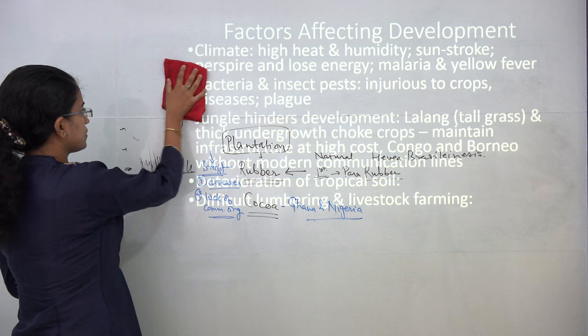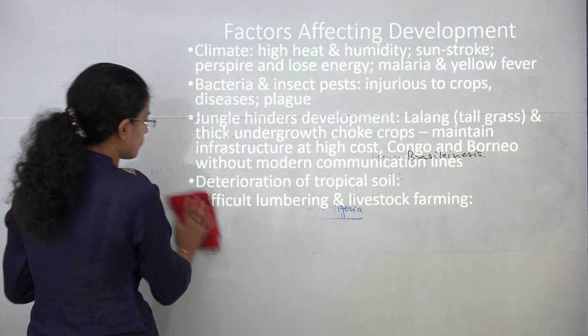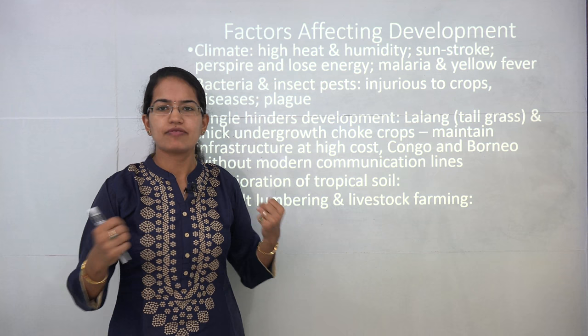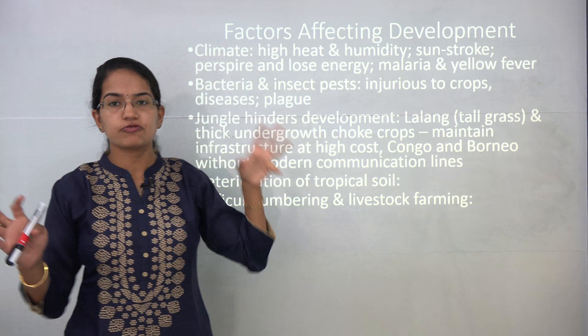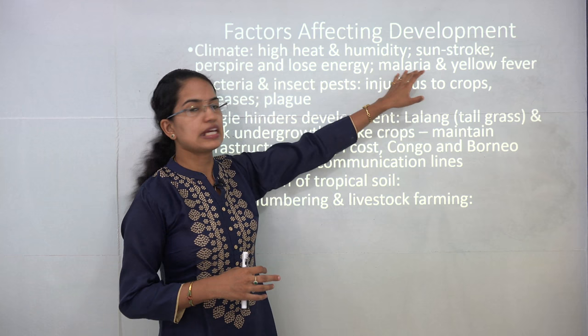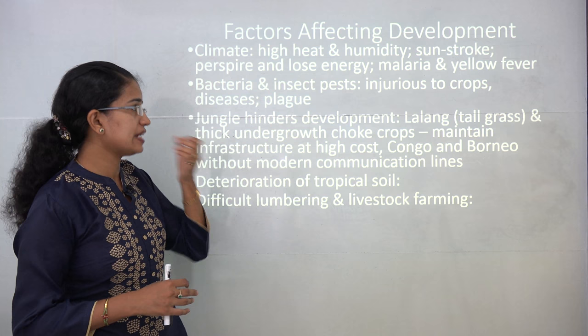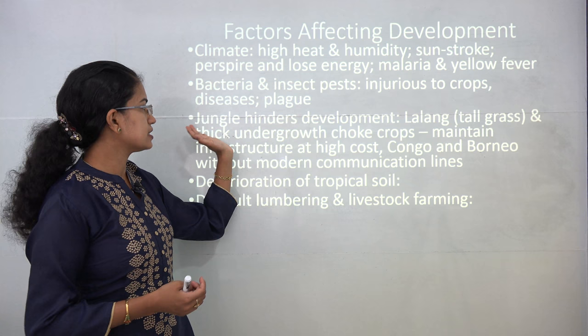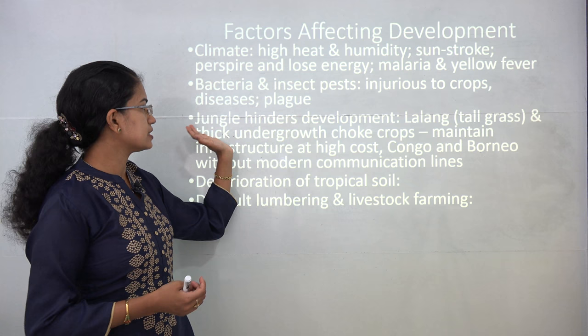Factors affecting development of the equatorial region include high temperature and high humidity, which cause sun stroke, excessive perspiration, and loss of energy. Dense forest growth makes the region prone to diseases; common ones are malaria and yellow fever. Bacteria and insect pests affect crops and cause human diseases such as plague.